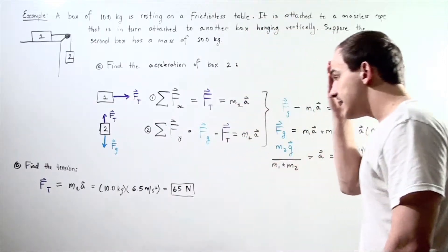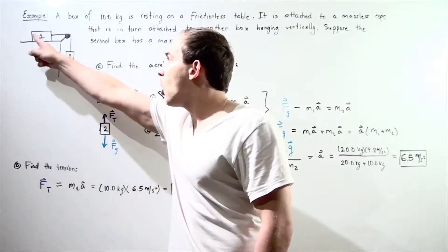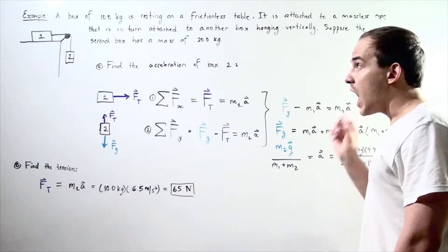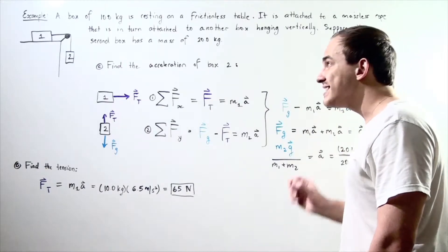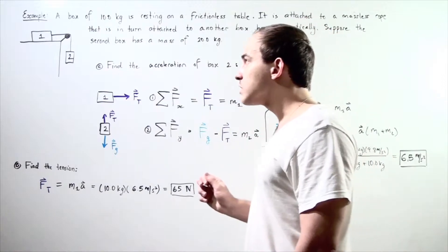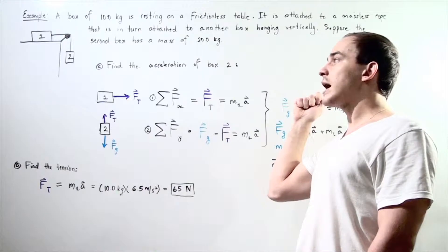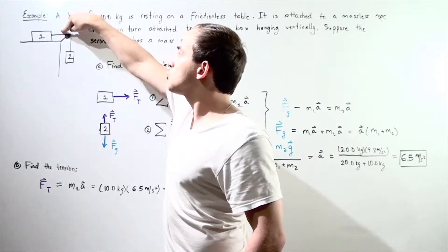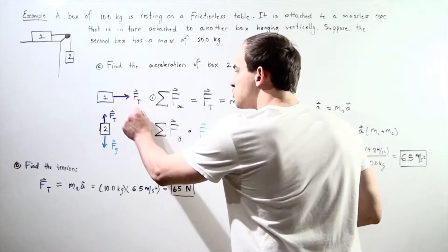Let's begin by looking at the free body diagram of both objects. Starting with object number one, which is resting on a frictionless table, there will be no resistance force. The only force on object one will act along the x-axis in the positive direction, which is the tension in the string. Let's represent this force as F_T.